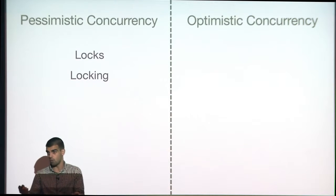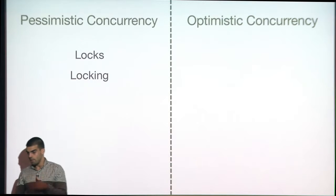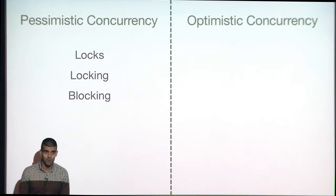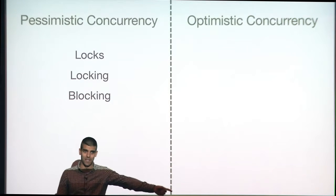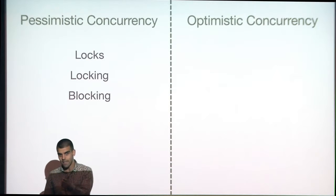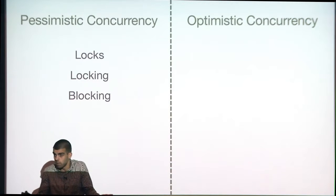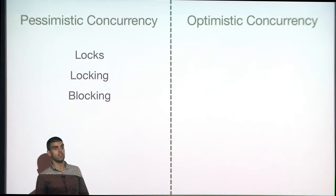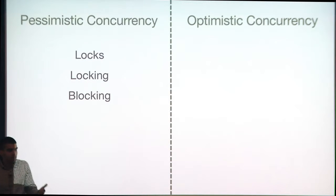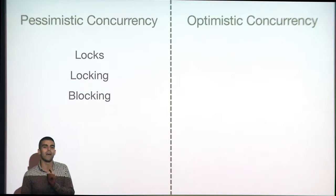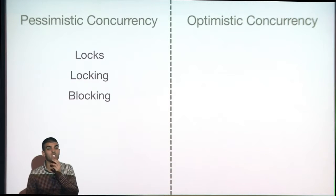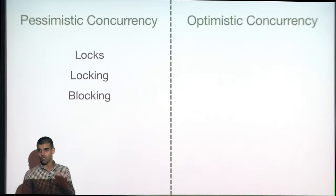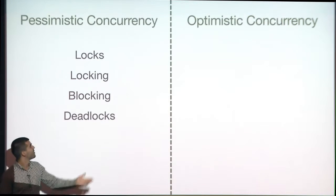Next we have blocking. Blocking is one of the most frequently seen concurrency problems. By itself, blocking is not a problem — you always get some blocking. The problem with blocking is when it lasts too long, then it becomes really interesting and concerning.